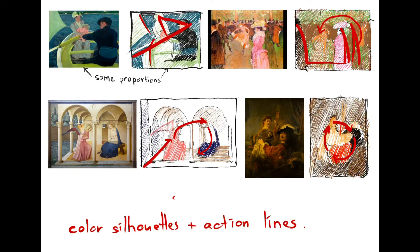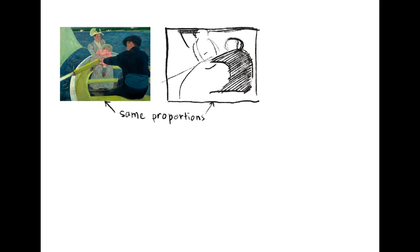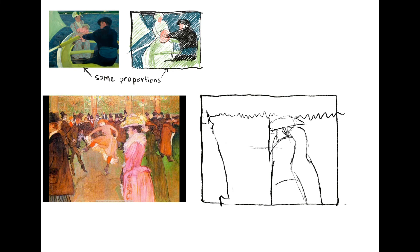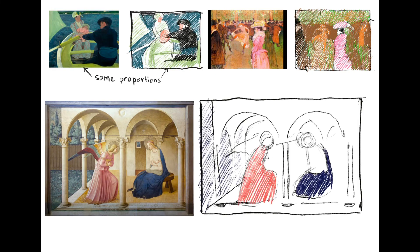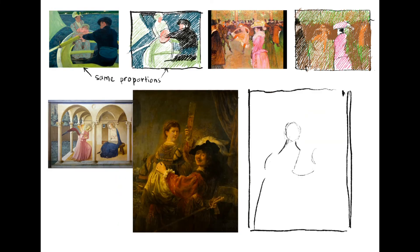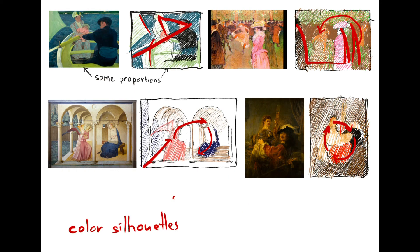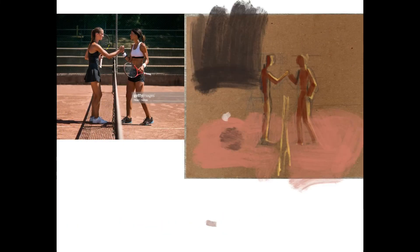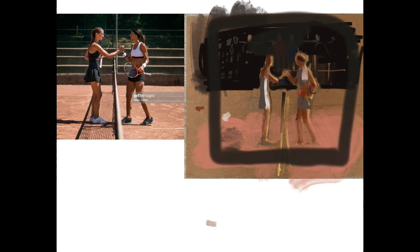I invite you to reverse engineer your favorite masterpieces, trying to understand why artists selected a particular composition. Start with a small rectangle in the same proportions as the original, and try to position the main silhouettes proportionally in it. Then, simplifying the colors, make several colorful shapes and try to analyze the action lines your eyes actually make while looking at it. These compositional sketches are called thumbnails, and that's exactly how you start working on any creative project. Good luck!